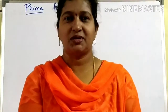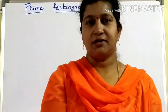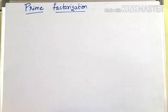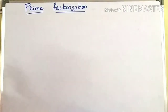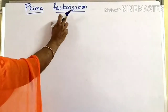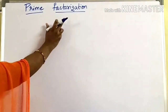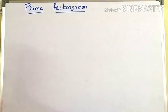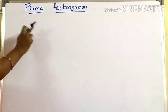Hello children, I am Prasanna. In this video I am going to explain prime factorization method. Prime factorization. When a number is expressed as a product of its factors, we say that number has been factorized. The process of finding the factors is called factorization. There are several ways in which a number can be factorized.